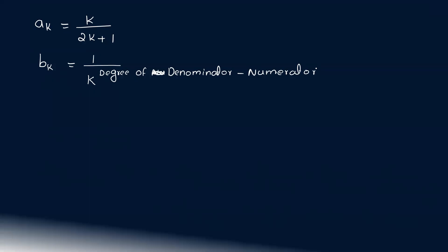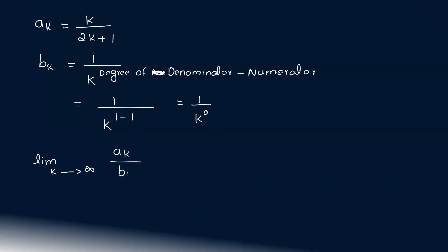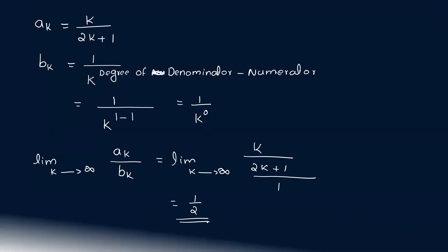So this is 1 over k raised to some power. The degree of the denominator is 1, the degree of the numerator is 1, so 1 minus 1 equals 0. That gives us b_k equal to 1 over k raised to 0. So the limit as k tends to infinity of a_k over b_k equals the limit as k tends to infinity of k/(2k+1) divided by 1, which gives us 1/2. This is a finite quantity.